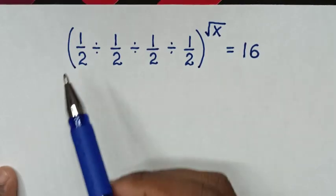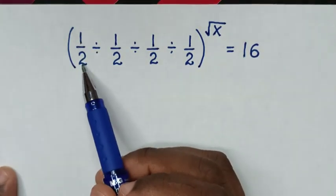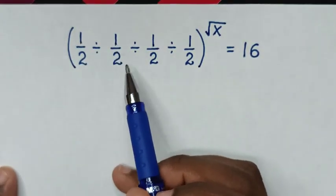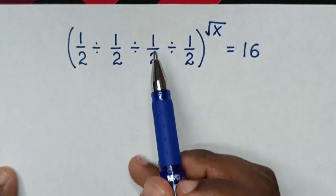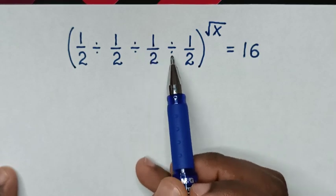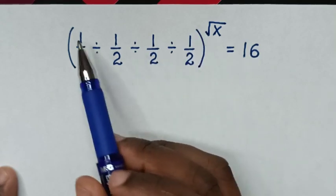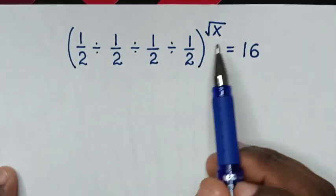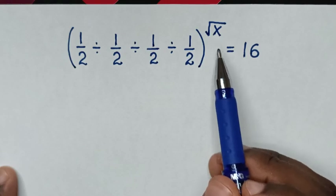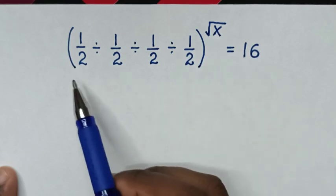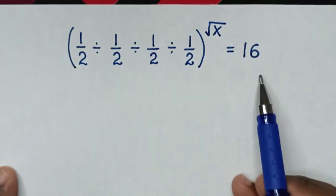Hello! How to solve: 1 over 2 divided by 1 over 2 divided by 1 over 2 divided by 1 over 2, in brackets, to the power of square root of x, is equal to 16. Find the value of x from this equation.